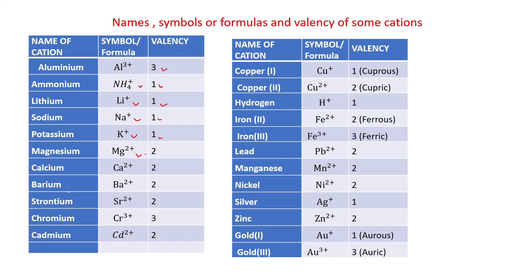Magnesium: Mg2+, valency is 2. Calcium: Ca2+, valency is 2. Barium: Ba2+, valency is 2. Strontium: Sr2+, valency is 2. Chromium: Cr3+, valency is 3. Cadmium: Cd2+, valency is 2.